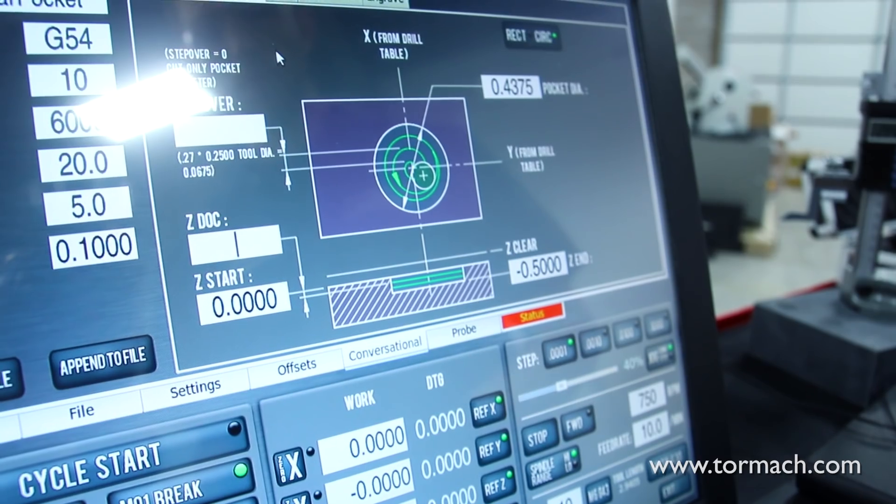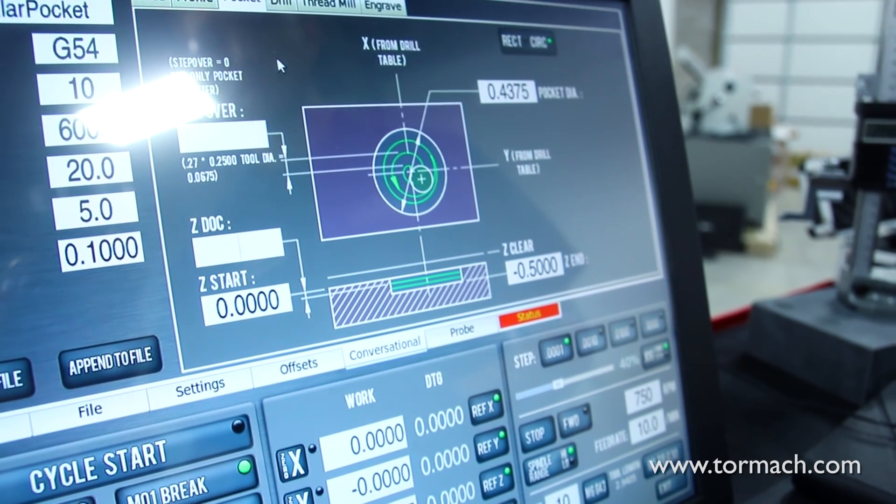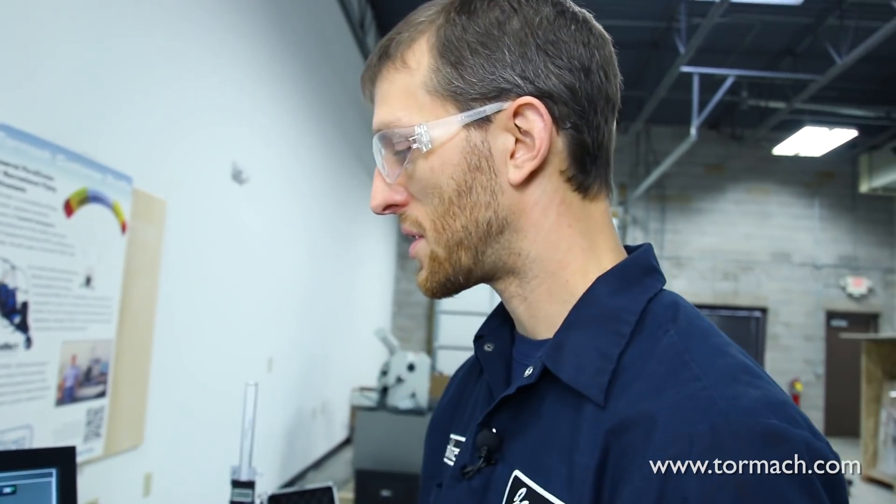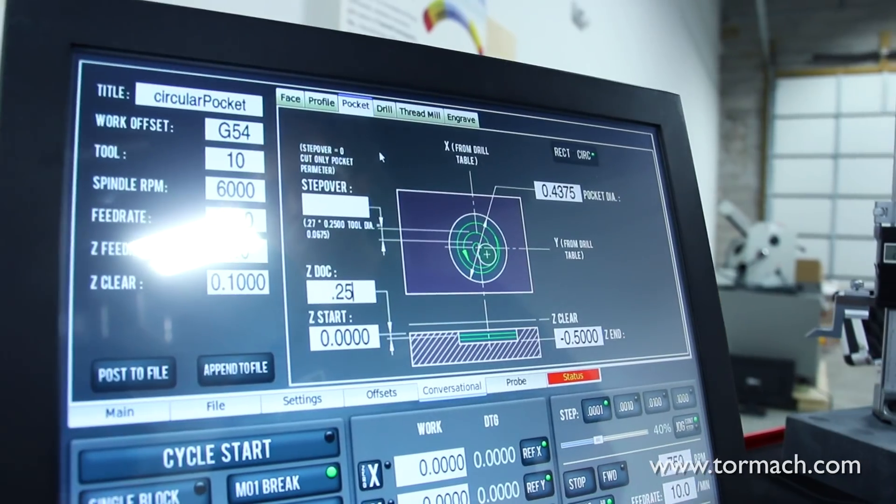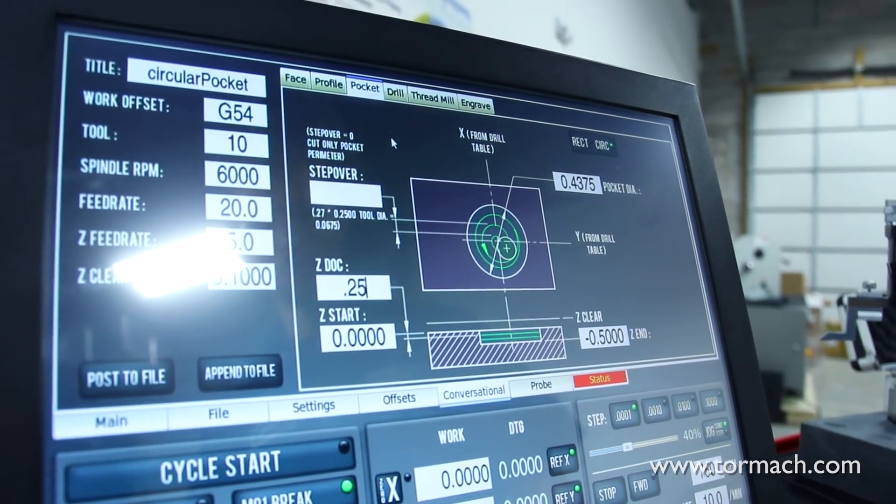For our Z end position we're going to go down to minus a half inch, then our depth of cut. The pocketing routine will do either real small plunge moves, almost like a peck drilling cycle, or it'll do a helical entry move depending on diameter of your tool and the hole diameter. We'll enter in a quarter inch depth of cut since we're using a quarter inch end mill.